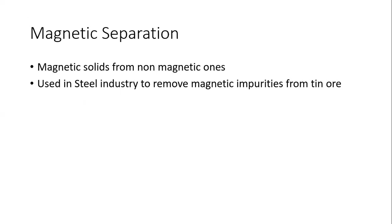Magnetic separation is straightforward — you separate magnetic things from non-magnetic things. For example, if you have iron and sand together, you can just magnetize the iron out. It is used in the steel industry to remove magnetic impurities from tin ore — passing the ore through a magnetic field pulls out the magnetic impurities, leaving the ore purer.